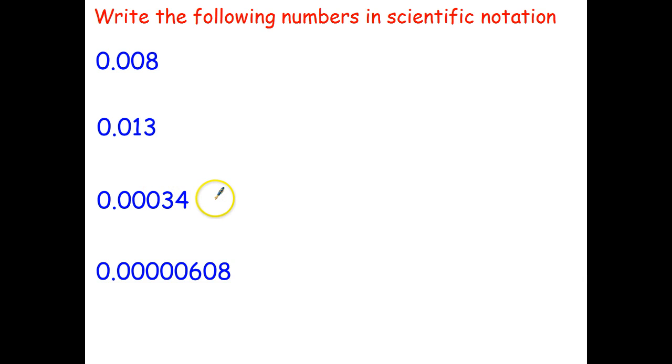I'll do this one and let you do the other three. I want to write 0.00034 in scientific notation. I've got to put the decimal point between the three and the four, so 3.4 times—and I moved it one, two, three, four places—so that's 10 to the negative 4. It's pretty easy once you understand how to do it. Go ahead and write the other three numbers in scientific notation please.